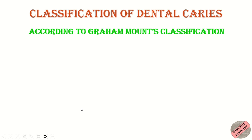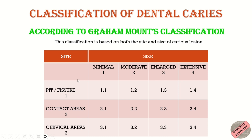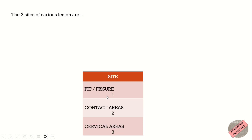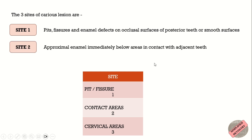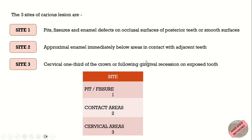Next is the Graham Mount classification. This classification is based on the fact that there are only three surfaces of the crown of a tooth that can be subjected to caries attack. It also takes into consideration the size of the lesion, making it a combination of the site and the stage of the defect. The three sites are: Site 1 — pits, fissures, and enamel defects on the occlusal surfaces of posterior teeth or smooth surfaces; Site 2 — the proximal enamel immediately below areas in contact with adjacent teeth; and Site 3 — the cervical one-third of the crown or following gingival recession on exposed tooth.